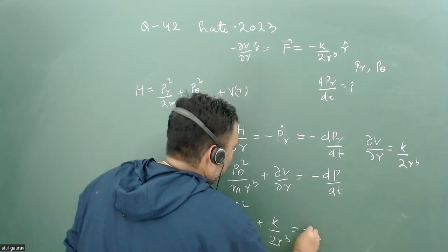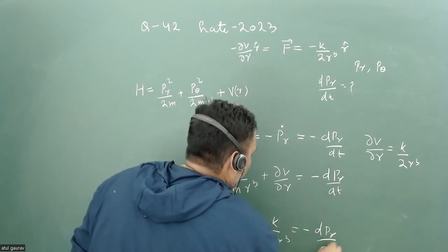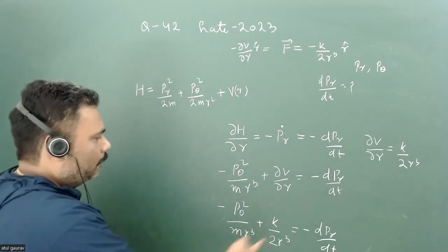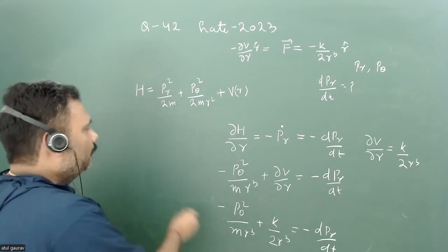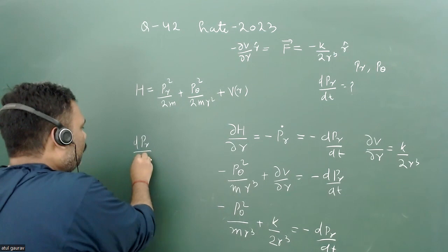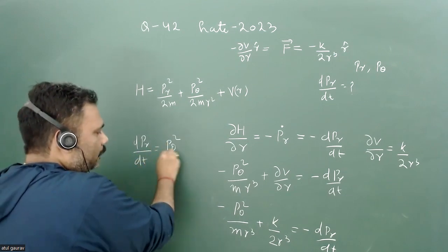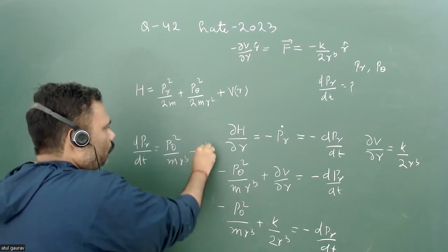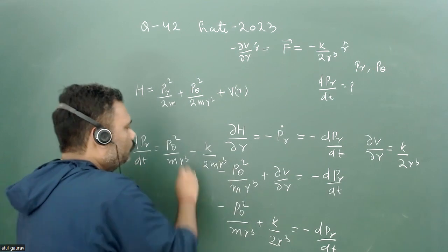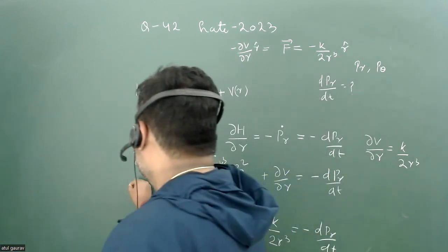This value equals p_theta²/mr³ plus k/2r³ equals minus dpr/dt. When we calculate dpr/dt, the negative sign will become here, so we have dpr/dt equals p_theta²/mr³ minus k/2r³. Now we can easily solve this one and this value equals dpr/dt.